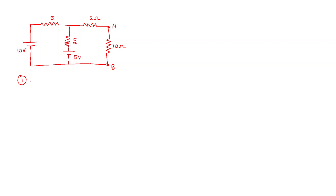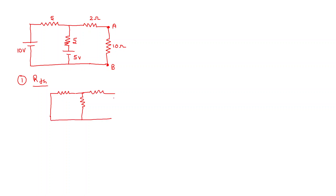As a first step, let me find Thevenin's resistance. We have already discussed during Thevenin's theorem how to find Thevenin's resistance. First, you have to remove the load and then remove all the sources in the circuit — the voltage source is removed by short circuiting and the current source by open circuiting. So let me draw the circuit without sources: short circuiting the 10 volt source, 5 ohm will be there, this 5 ohm also will be there, 5 volt is short circuited, this 2 ohms is available, and the load is removed. So AB.